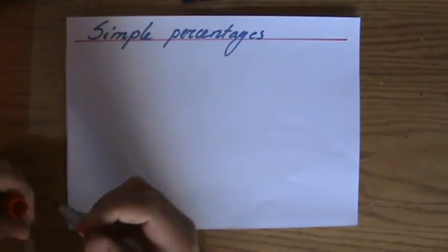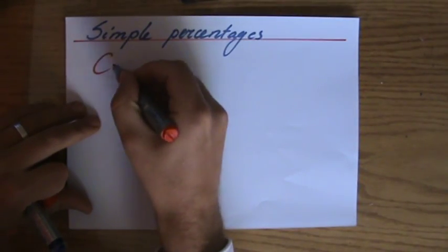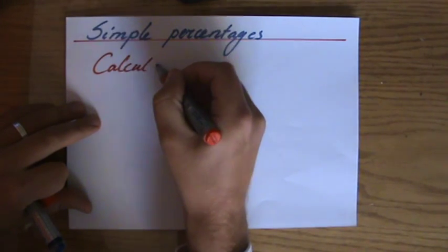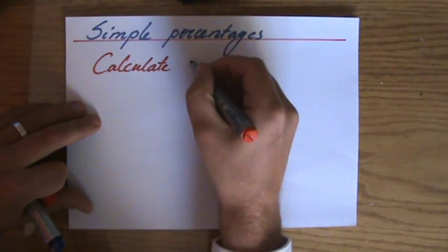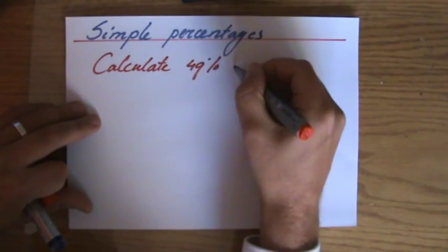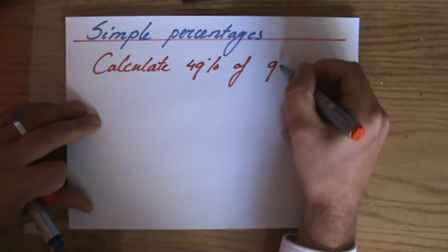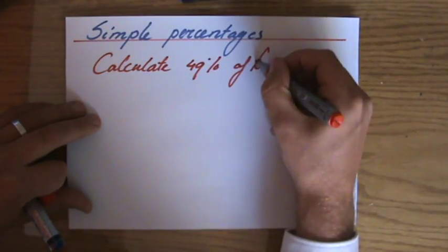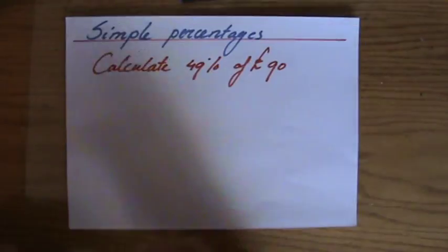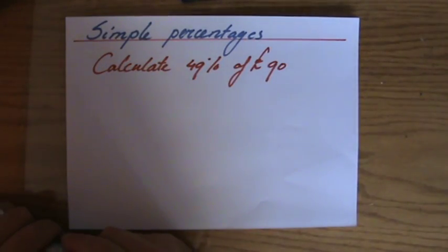So another video on calculating percentages. For instance, calculate—what shall we do? Let's do 49% of 90. I've done some dollars now, let's do some pounds. Calculate 49% of 90 pounds.